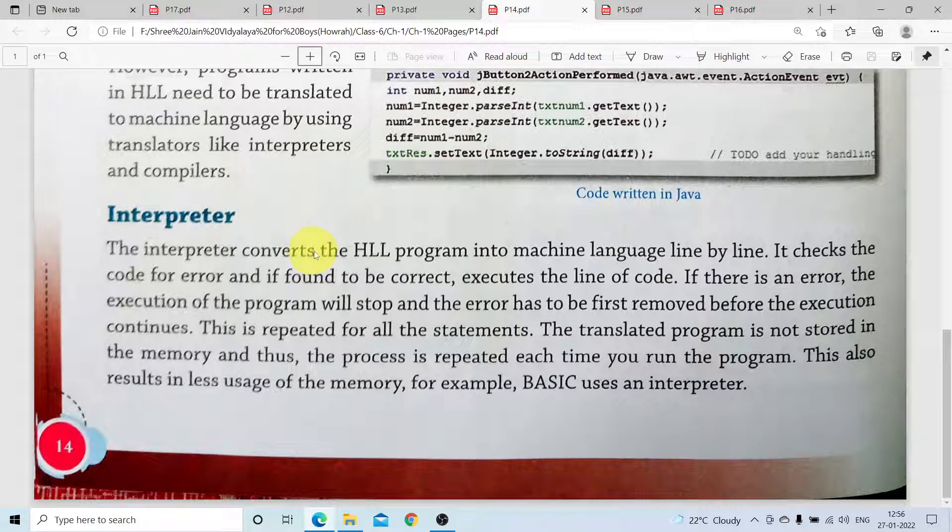Now we are going to learn about the programs which help us convert high-level language into machine-level language. One program is called Interpreter and another program is called Compiler.